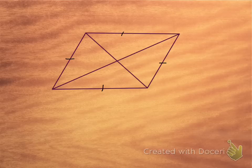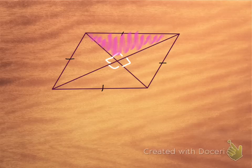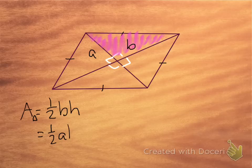We just drew the two diagonals, and if you remember, the two diagonals in a rhombus are always perpendicular — so all four of these angles would be right angles. Now, if I wanted to find the area of one of these triangles — let's say this triangle I'm coloring in pink — the area of a triangle is one-half base times height. I'm going to call the half-diagonal lengths A and B, so the area of this triangle is one-half A times B.